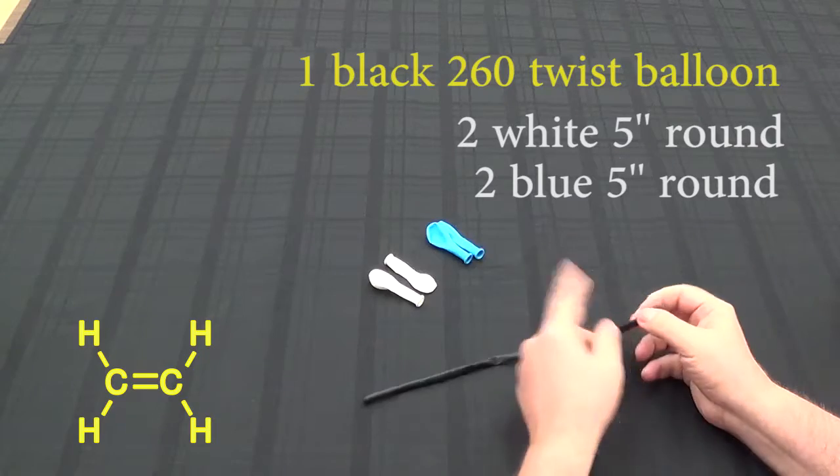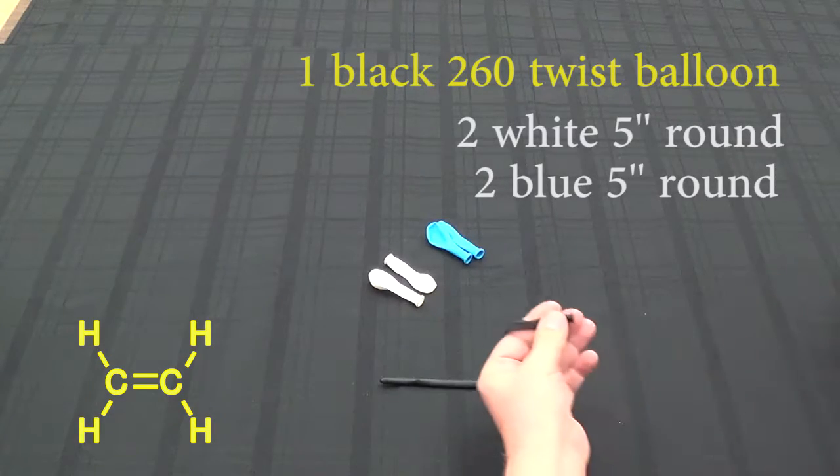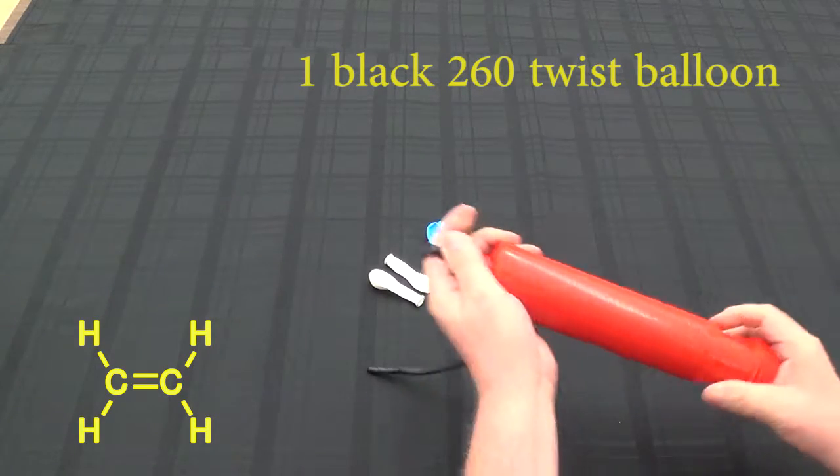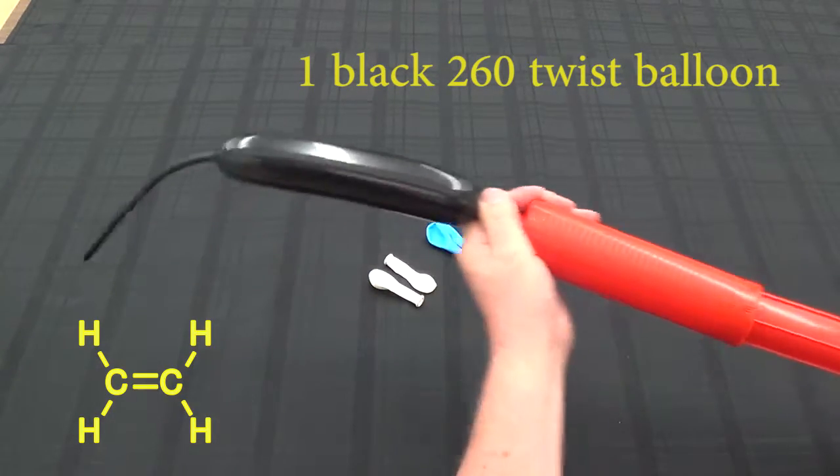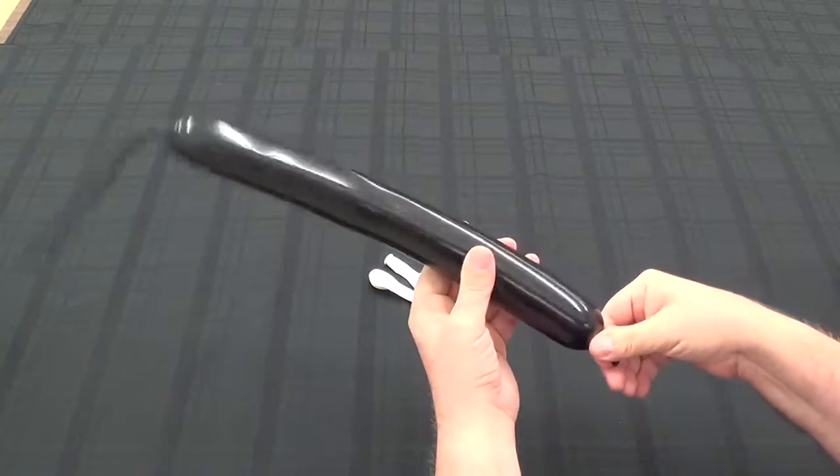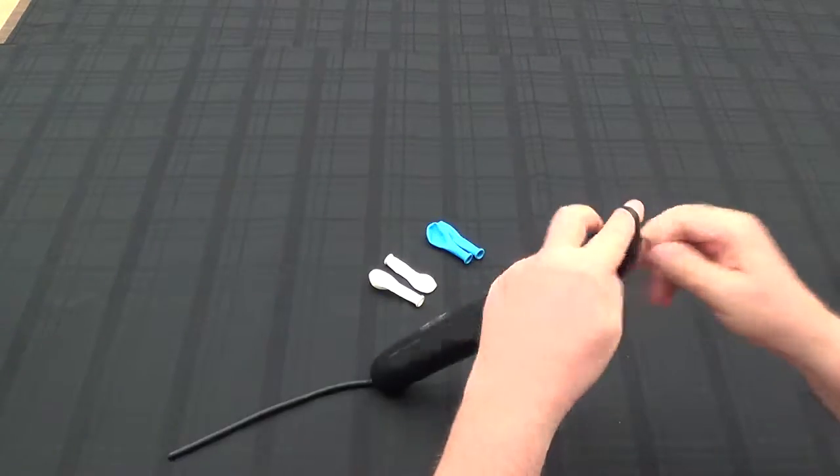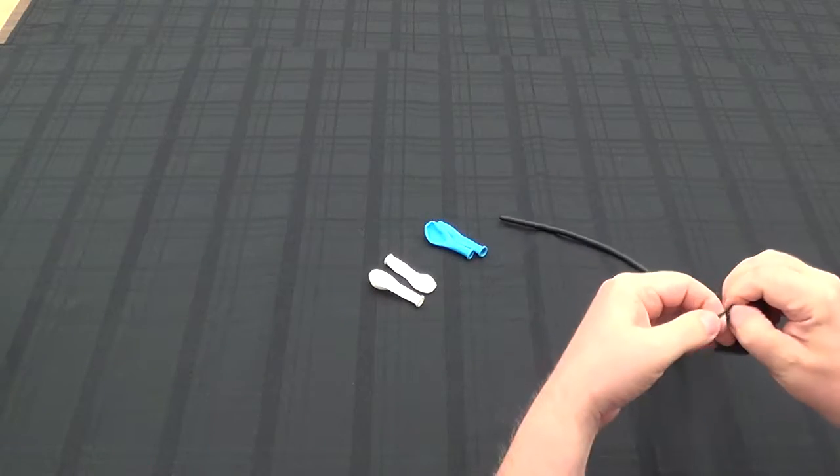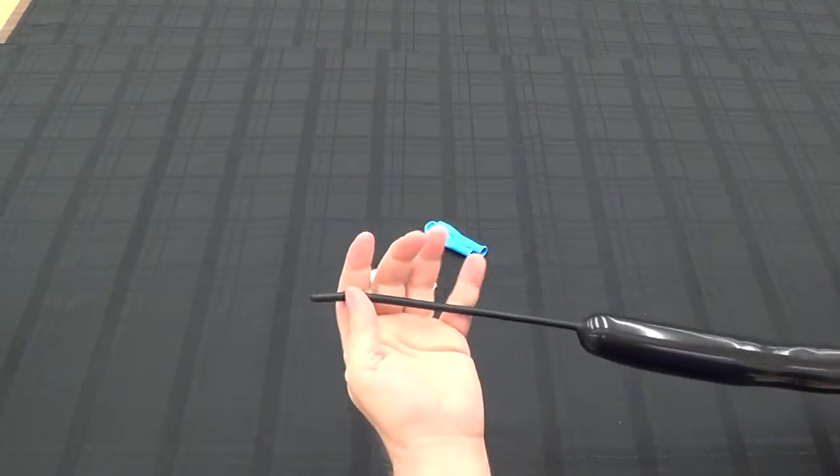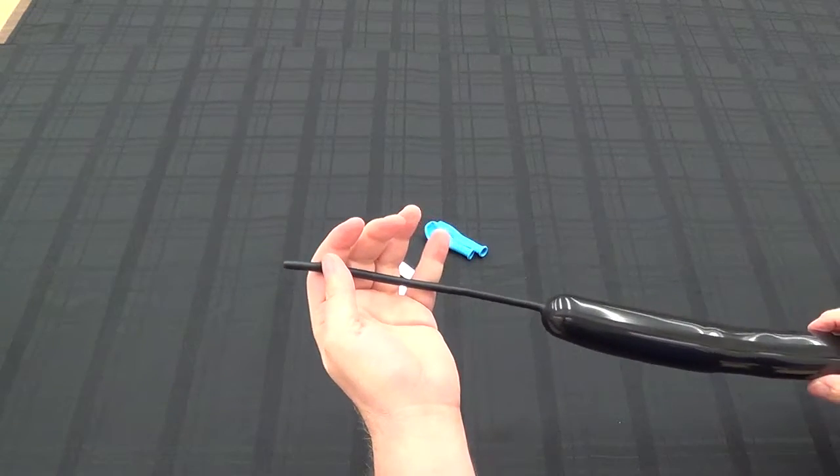Since ethylene is only two carbons, it's fairly short. We're not going to use much of this balloon so we're going to pump this up using just two pumps and that should be sufficient. We're going to burp it and then tie it off. Notice there's a good amount of balloon left. Don't worry about that. We're going to cut that off at the end.